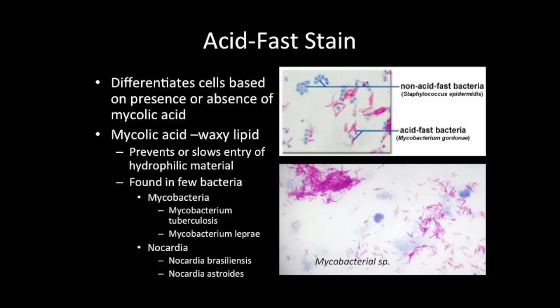Few bacteria contain mycolic acid, but included within those few are some notably important pathogens. Mycolic acid is found in the cell walls of bacteria in the genera Mycobacteria and Nocardia. Mycobacterium tuberculosis and Mycobacterium leprae are two species that cause the well-known diseases of tuberculosis and leprosy, respectively. Nocardia brasiliensis and Nocardia asteroides are opportunistic pathogens.